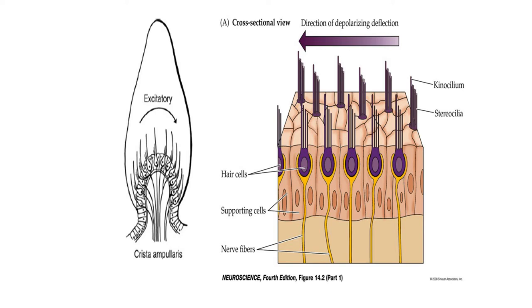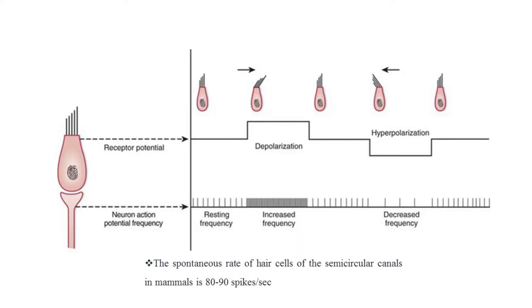The direction of excitation — depolarization — occurs when the stereocilia move towards the kinocilium. When the kinocilium moves towards the smaller stereocilia, it leads to hyperpolarization. This means there is either an increase or decrease in action potentials. During the depolarization phase there is an increased frequency of action potentials, and during hyperpolarization there is a decreased frequency.